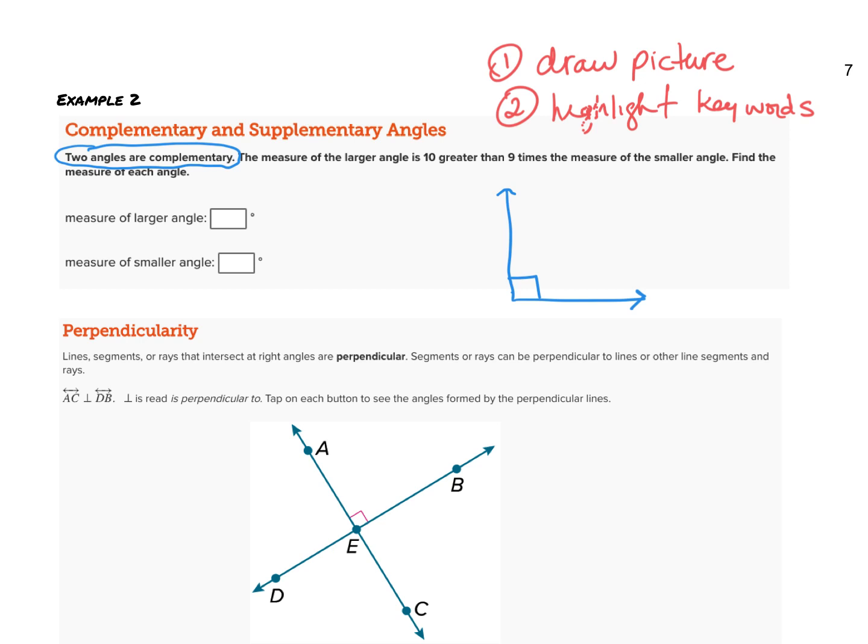It says the measure of the larger angle is 10 greater than 9 times the smaller angle. Obviously we have a larger angle and a smaller angle. It doesn't matter how I draw my diagram as long as one is bigger and one is smaller. Now of course I'm not told what the angles are, but with any problem when I don't know what the value is for something, we use a variable. I'm automatically going to label my smaller angle as x.